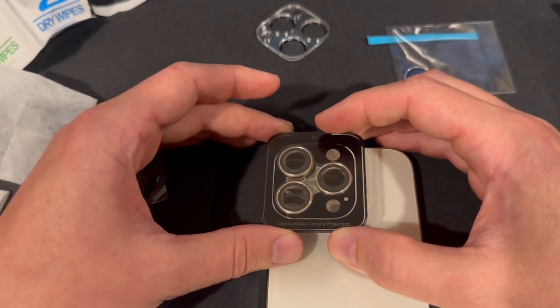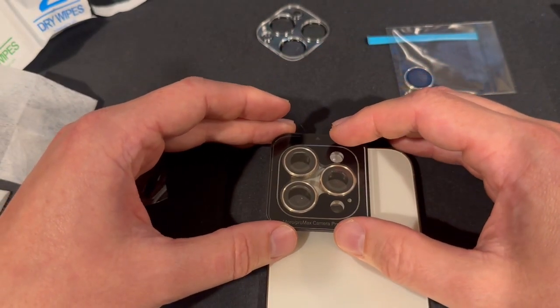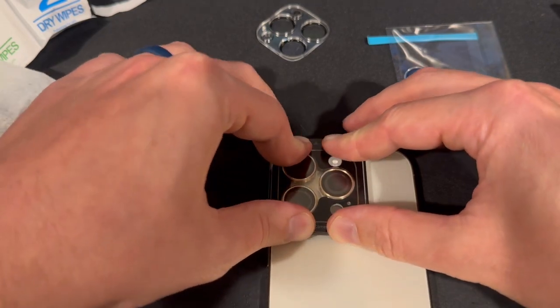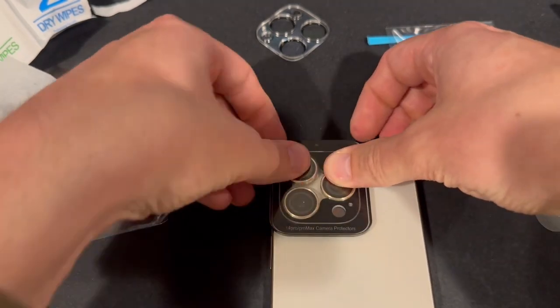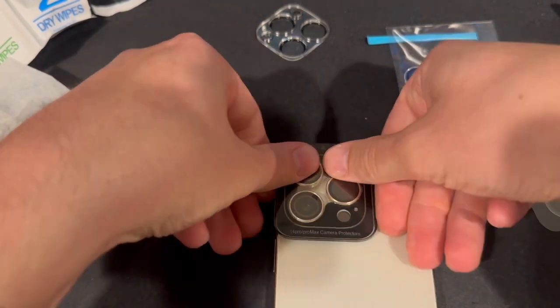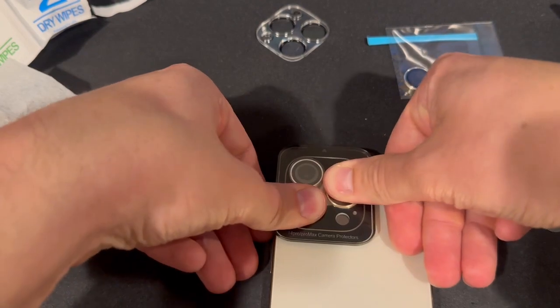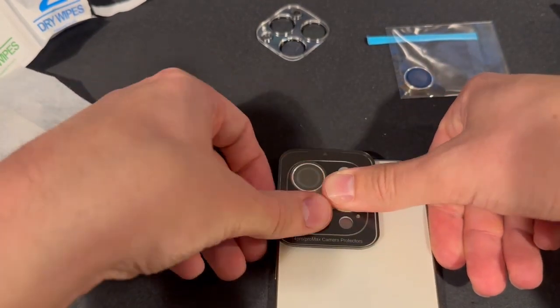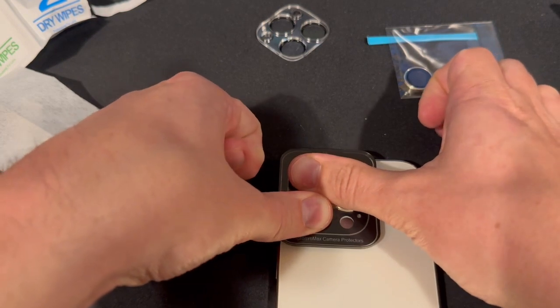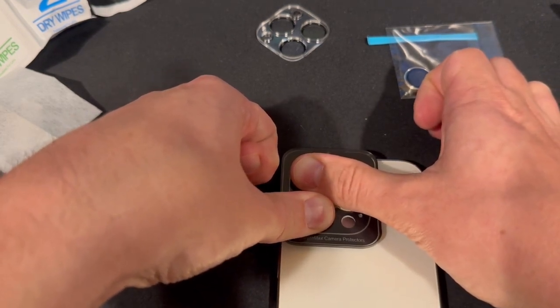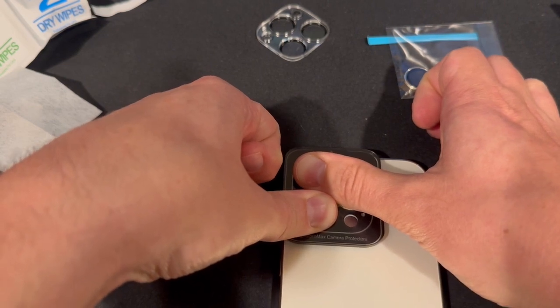Now we're going to lower everything carefully down onto the phone, trying not to touch anything we don't want to touch. Now it's down, let's push everything into place. Let's give it a pretty good push with our thumbs for a couple seconds, really give that adhesive a chance to spread out and stick.